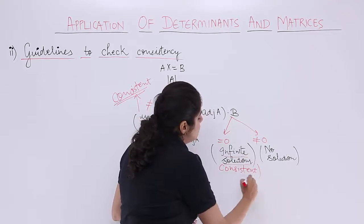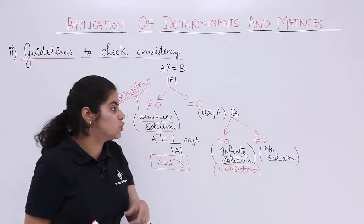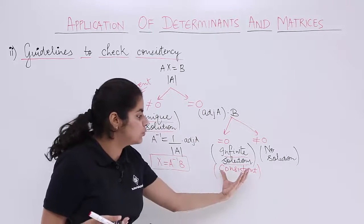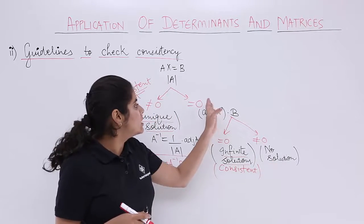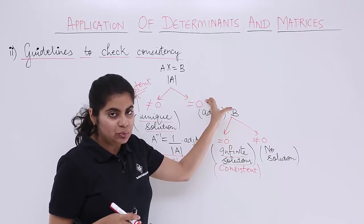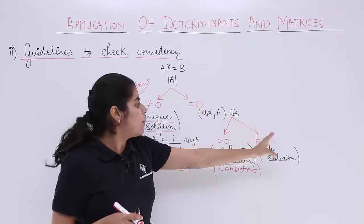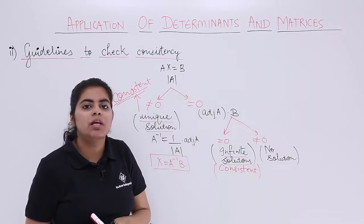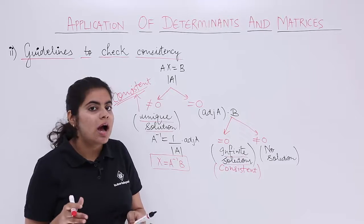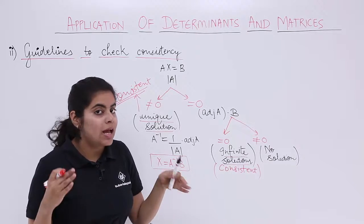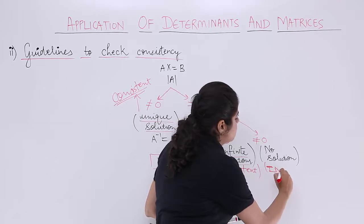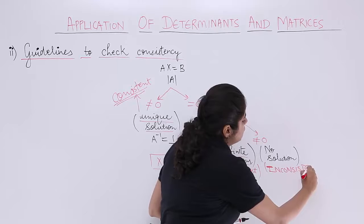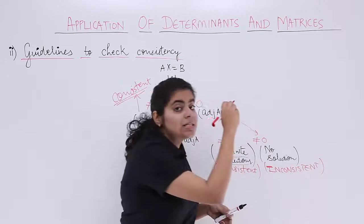So consistent in two cases. Either one solution or more solution. But what if I have no solution category? That means 0 for det value, determinant value 0 but later I get not 0. If later I get not 0, I would be having no solution. And for no solution, I say my system of equations is inconsistent. That means it is not consistent.